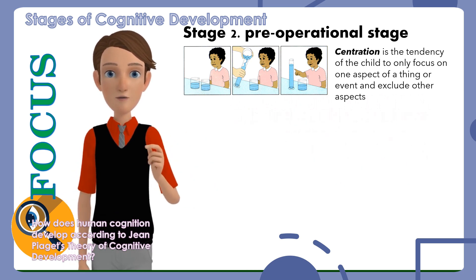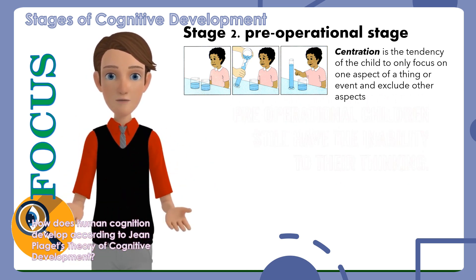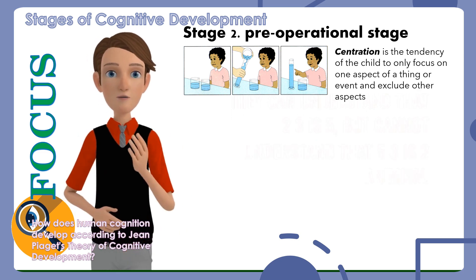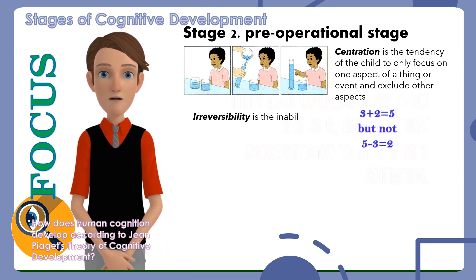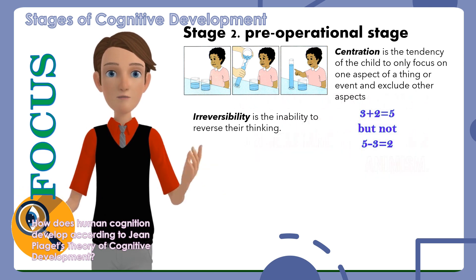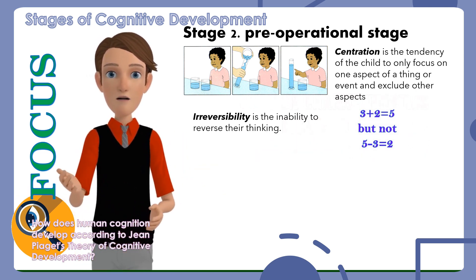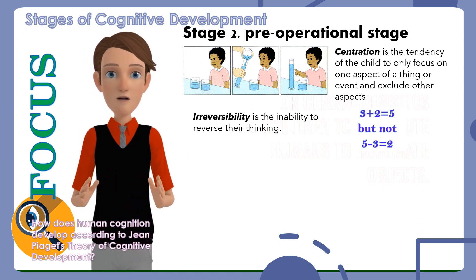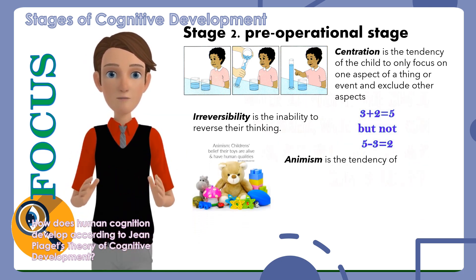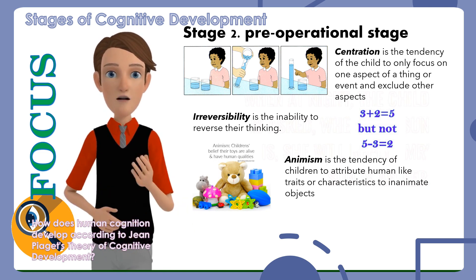Irreversibility: Pre-operational children still have the inability to reverse their thinking. They can understand that two plus three is five, but cannot understand that five minus three is two. Animism: This is the tendency of children to attribute human traits or characteristics to inanimate objects. When asked at night where the sun is, the child will reply, 'Mr. Sun is asleep.'